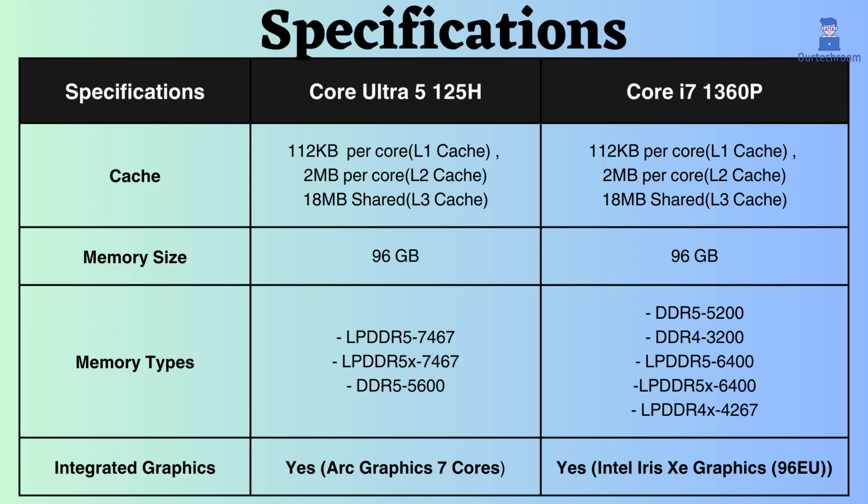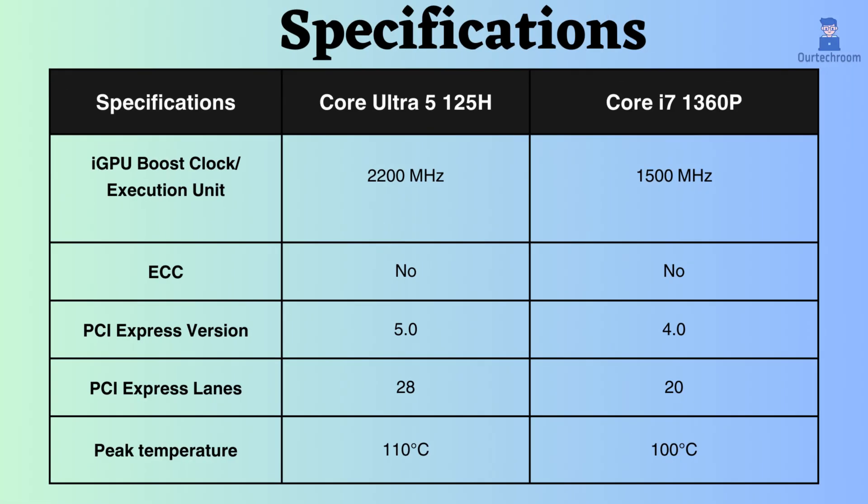Both support integrated graphics, but the graphics frequency for the Core Ultra 125H is higher than that of the Core i7-1360P, making it better for graphical activities. Neither supports ECC, so they are not suitable for critical systems like workstations and servers.